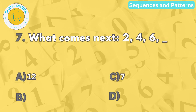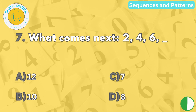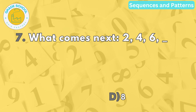Question number seven. What comes next? Two, four, six, blank. The correct answer is letter D. Eight. The sequence adds two to each number in order.